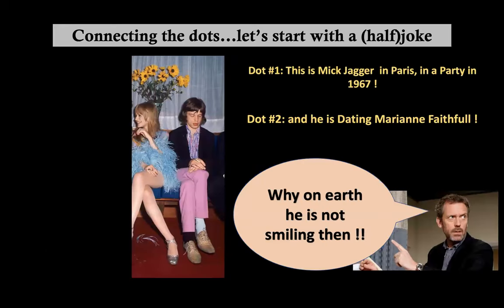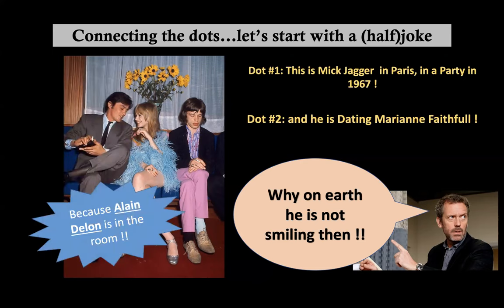Let me go back to the famous picture. We have Mick Jagger — cool man of his career — in Paris, at a cool party in 1967, dating Marianne Faithfull. Why on earth is he not smiling? Because Alain Delon is in the room. So: if something is off in your radiological assessment of a child, think out of the box. And if you are dealing with tumors, think cancer predisposition syndrome.